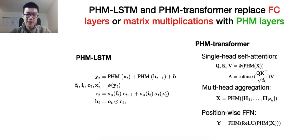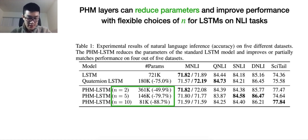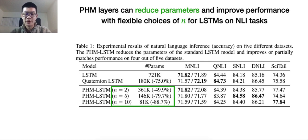To demonstrate the effectiveness of PHM layers, we equip existing LSTM and Transformer models by replacing the FC layers or matrix multiplications with PHM layers while keeping the rest unchanged, resulting in PHM-LSTM and PHM-Transformer models. On natural language inference tasks, PHM layers reduce parameters and improve performance with flexible choices of hyperparameter N. As highlighted in the green boxes, increasing N gives more parameter saving while performance can partially match or even improve the baseline for LSTM models.